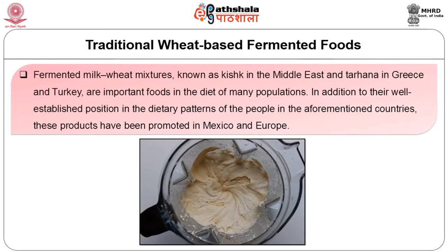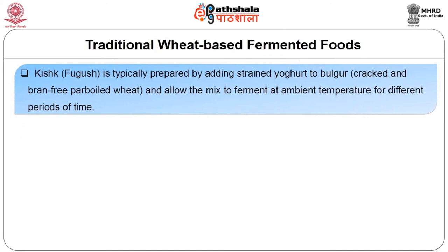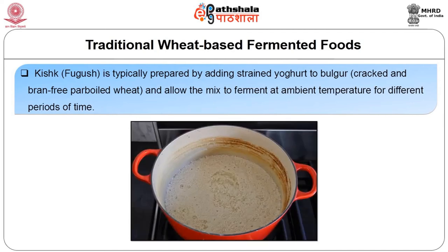The fermented milk-wheat mixture known as Kishk in the Middle East and Trahana in Greece and Turkey are important foods in the diet of many populations. Kishk is typically prepared by adding strained yogurt to bulgur and allowing the mix to ferment at ambient temperature. The wheat grains are boiled until soft, dried, milled and sieved to remove the bran. Milk is separately concentrated and mixed with moistened wheat flour. The milk undergoes a lactic fermentation and the resulting paste is dried to a moisture content of 10 to 13 percent and then ground into a powder. The product is stored in the form of dried balls, brownish in color with a rough surface and hard texture.